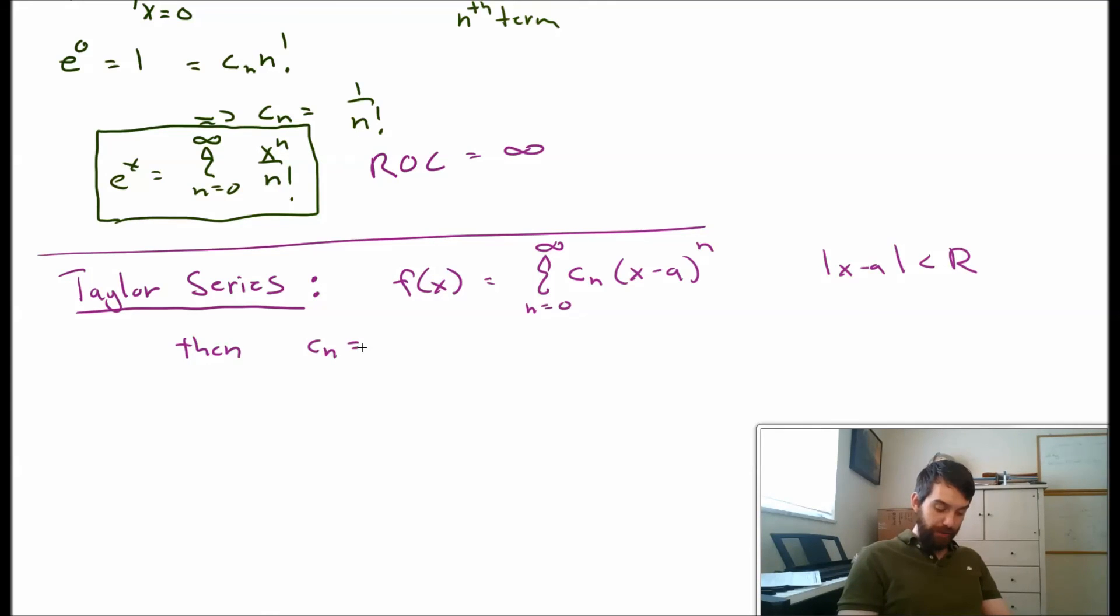Then, the cn's have the following formula. They are given to be the nth derivative of the function f(x) at the particular center, at the center of a, all divided out by that n factorial term.